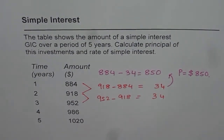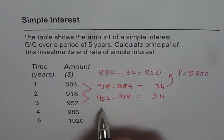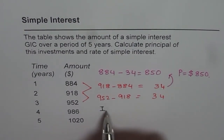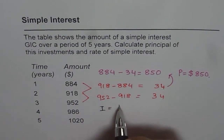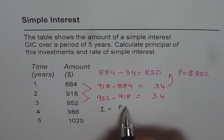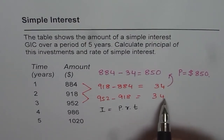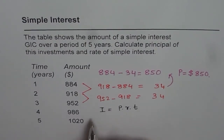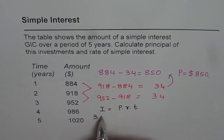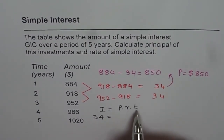Simple interest is given by the formula I equals P times R times T, where I is interest, P is principal, R is rate, and T is time. The interest per year is $34.